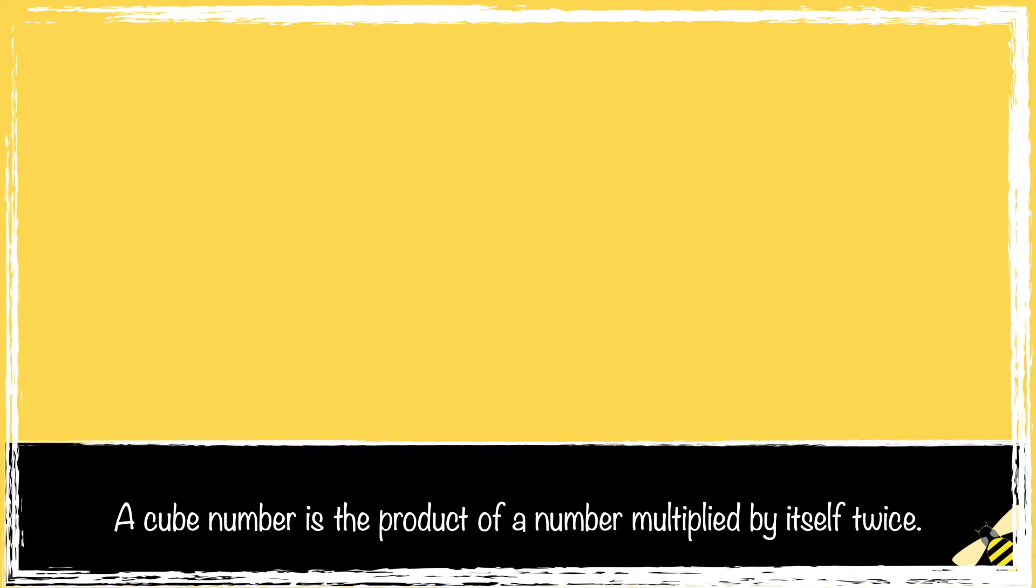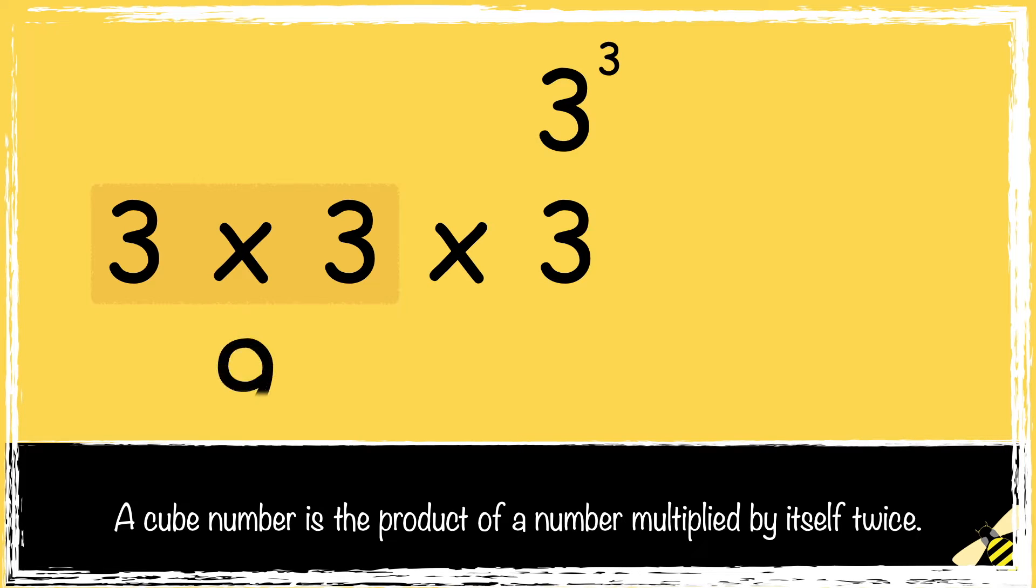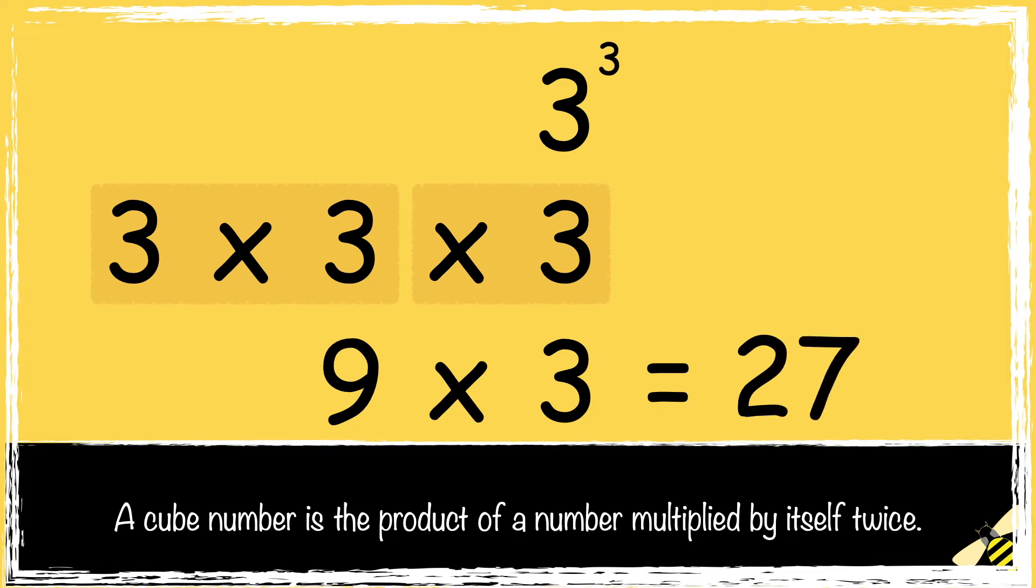Here's another one. 3 cubed is 3 multiplied by 3 multiplied by 3. So first we work out the square number. 3 times 3, which is 9. Then we need to multiply 9 by the original number again. So 9 times 3 is 27. So 3 cubed is 27.